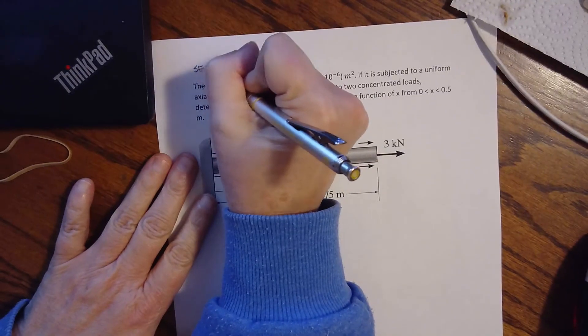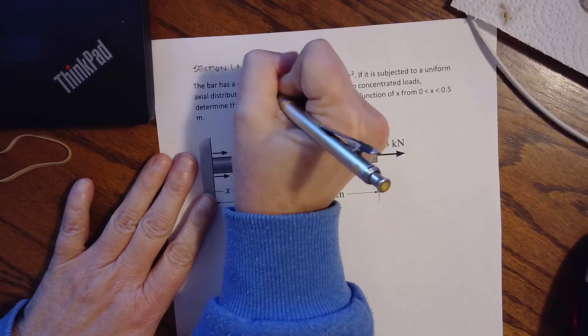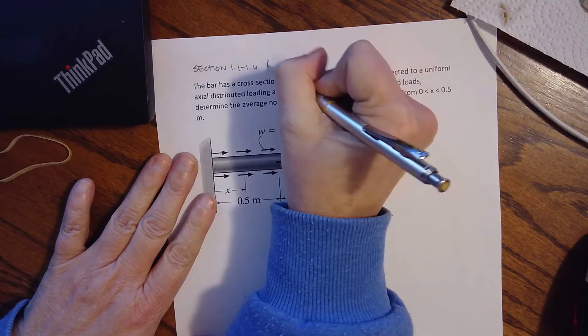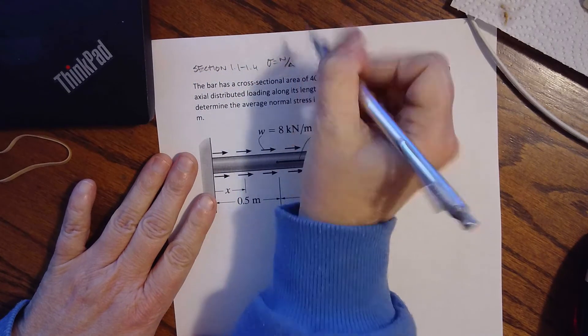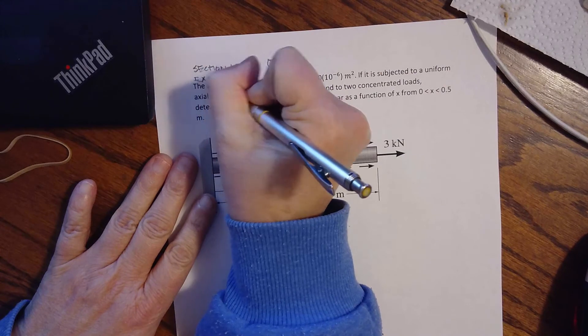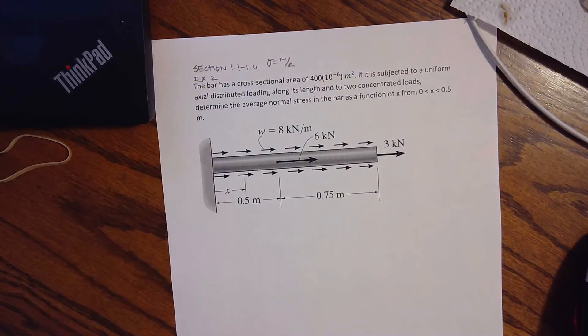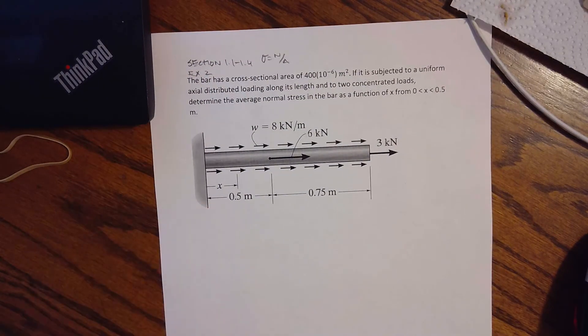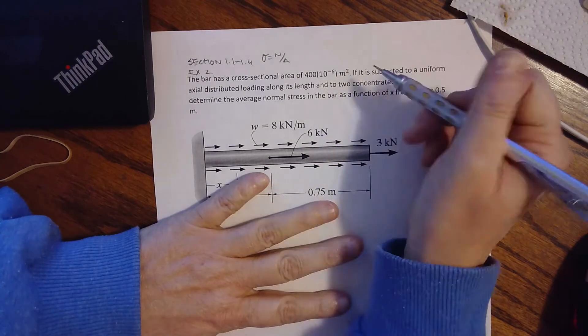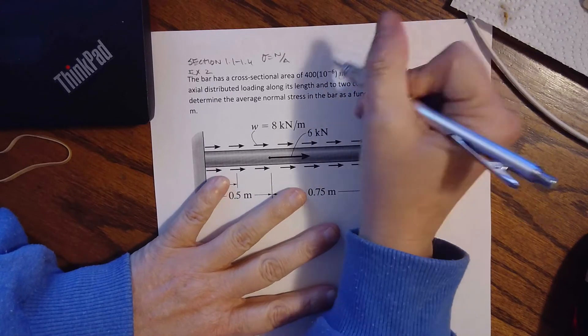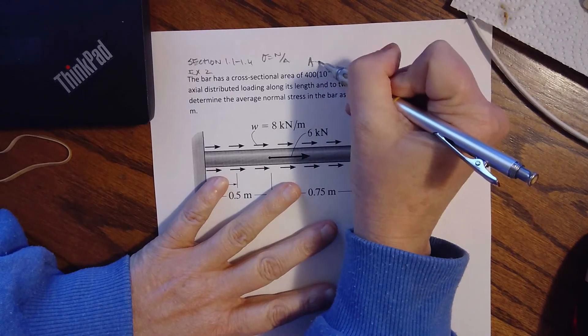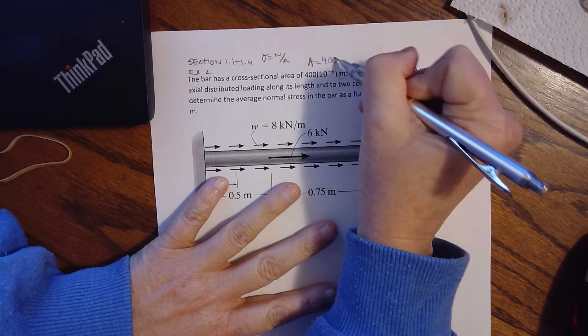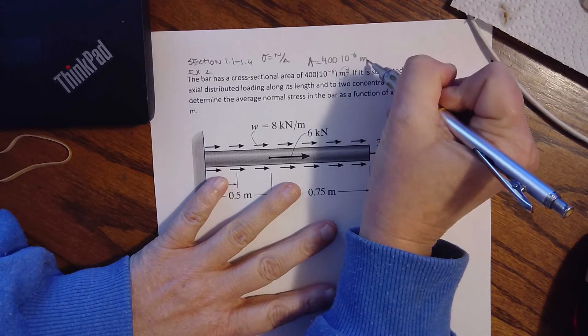Okay, so we are in section 1.1 to 1.4. We are talking about normal stress, which is N over A, and this is example two that's in your example PDFs. So if I have a bar with a cross-sectional area of 400 times 10 to the negative 6 meter squared, that's nice that I'm already in the correct unit.